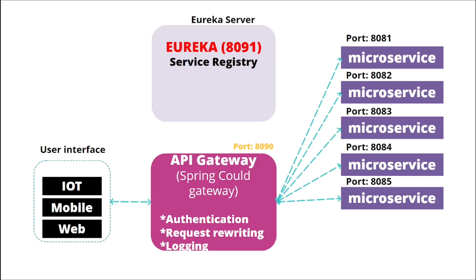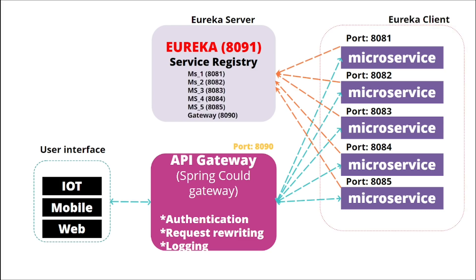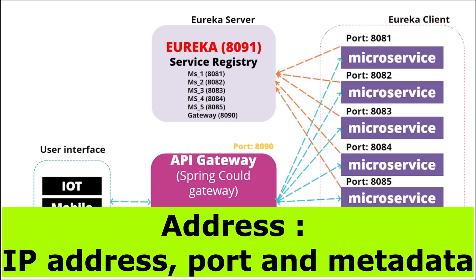So for this, we use Eureka server for the registry of microservices and API Gateway purely for routing service calls. Whenever we deploy a microservice, it registers itself to the Eureka server, as each microservice has the Eureka server address in its configuration file. In this way, the microservice becomes a Eureka client. Eureka holds the address of each microservice — the IP address of the server and the port number on which that service is running.